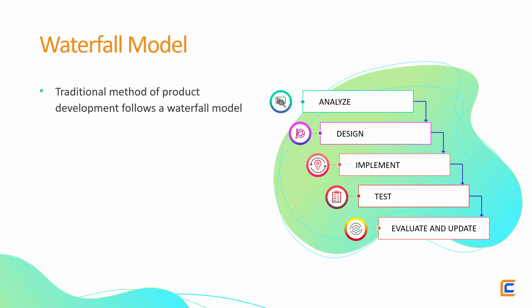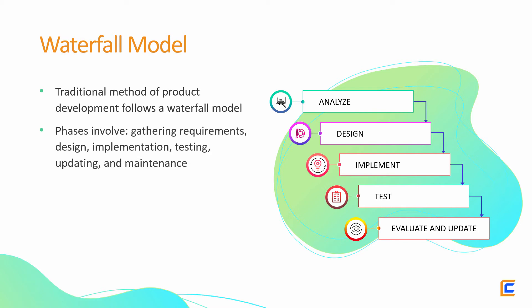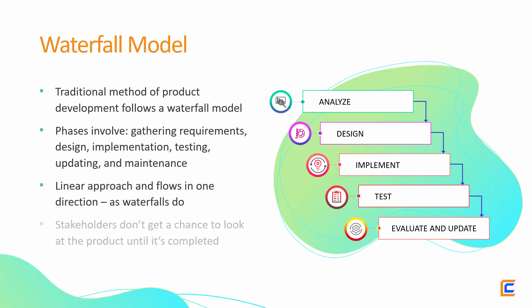The traditional method of product development follows a waterfall model. The diagram here summarizes the waterfall approach wherein you gather requirements, then move to design, then move to implementation, testing, making updates, and then maintain the product if needed. That is, after you analyze and design the product features, you develop a version of the complete product. Such an approach is called waterfall because it's linear and flows in one direction as waterfalls do. The external, or at times internal, stakeholders don't get a chance to look at the product until it's delivered.